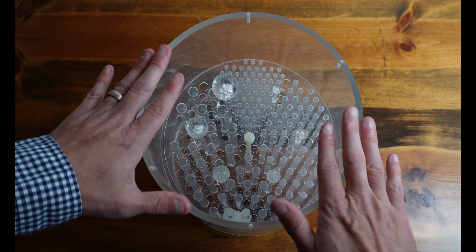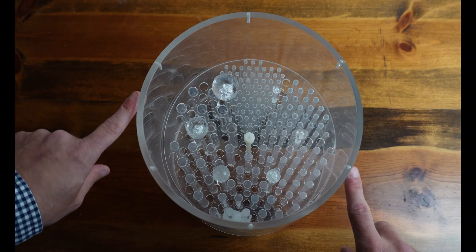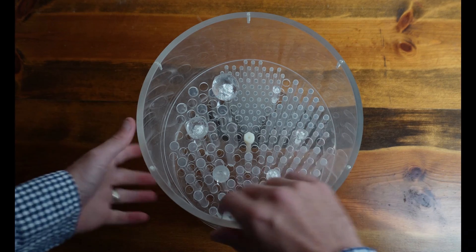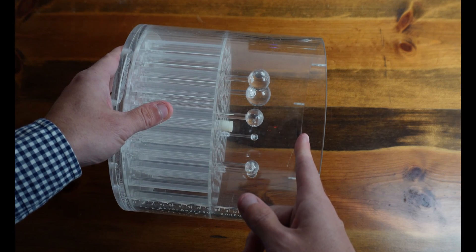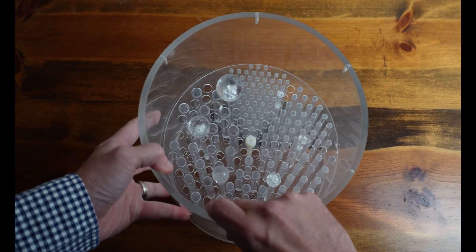So the next thing that we do is we fill the Phantom with water. I usually fill it up pretty close to the top of the Phantom. Fill it all the way up as much as you can. And then we put the lid on it.